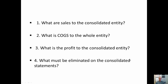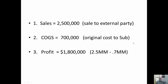Pause the video for a moment and think: what are sales to the consolidated entity, what is cost of goods sold to the consolidated entity, and what is the profit to the consolidated entity? To the consolidated entity there's only one sale — it's the sale outside of the company: $2.5 million.